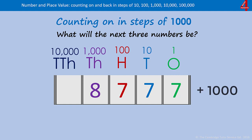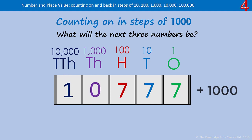The first thousand we count on will take eight thousand up to nine thousand — nine thousand, seven hundred and seventy-seven. Adding another thousand takes that nine thousand to zero, so we need to add one into the ten-thousands column. It's helpful to say: we've gone from eight thousand to nine thousand to ten thousand. Then adding another thousand brings us to eleven thousand, seven hundred and seventy-seven.